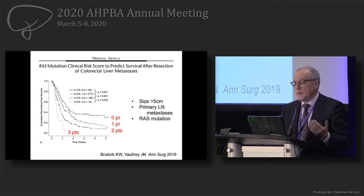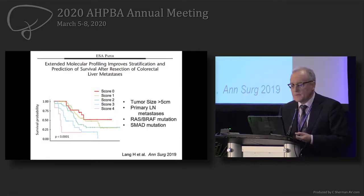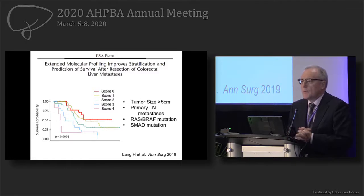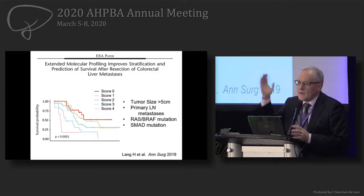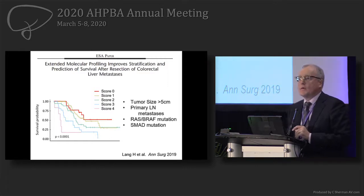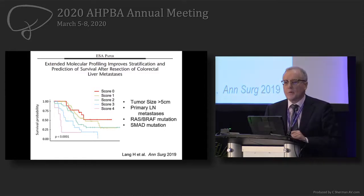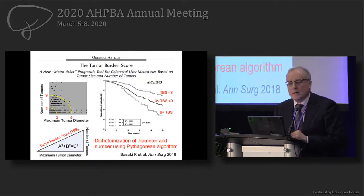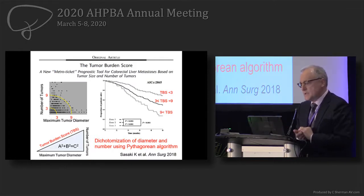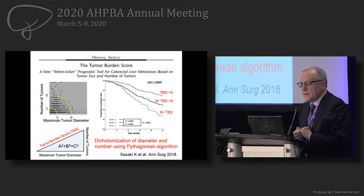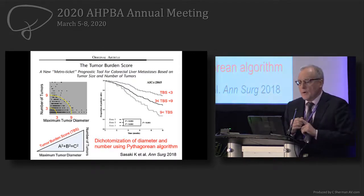RAS can help in the prediction of prognosis, probably better than clinical factors. The three tiers can be used, but patients need to have their primary removed to determine whether lymph nodes were positive or negative. There is a new proposal by Hoke Lang in Mainz, Germany — a score adding the SMAD4 mutation, which occurs in about 10% of patients with colorectal liver metastasis. It carries a very bad prognosis. Sasaki and Tim Pollack proposed the tumor burden score, based on a Pythagorean calculation with three zones of prognosis divided by tumor size and number.